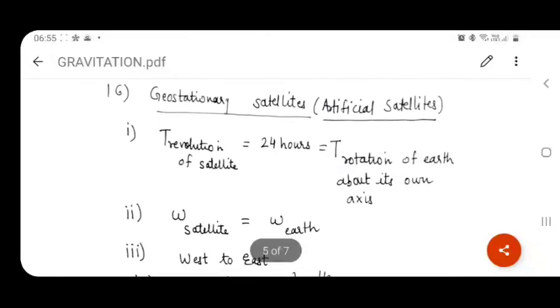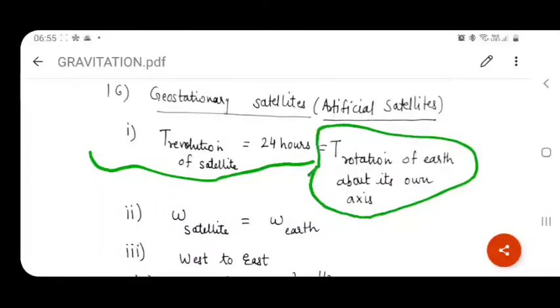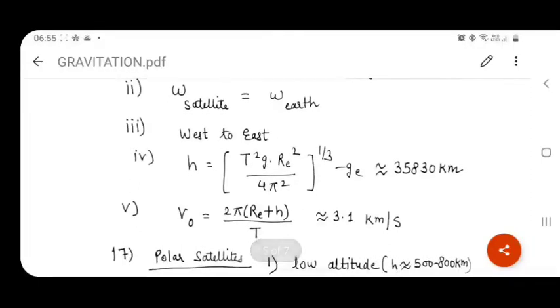The next topic is geostationary or artificial or geosynchronous satellites. The following conditions are satisfied. First, time period of revolution is equal to 24 hours, which is equal to the time period of rotation of Earth about its own axis. Then second point is both have same angular velocity. As the Earth goes from west to east sense, same sense satellite follows. Next is the height of satellite from surface of Earth is about 35830 km. You may learn the values and next, its critical velocity is about 3.1 km per second.